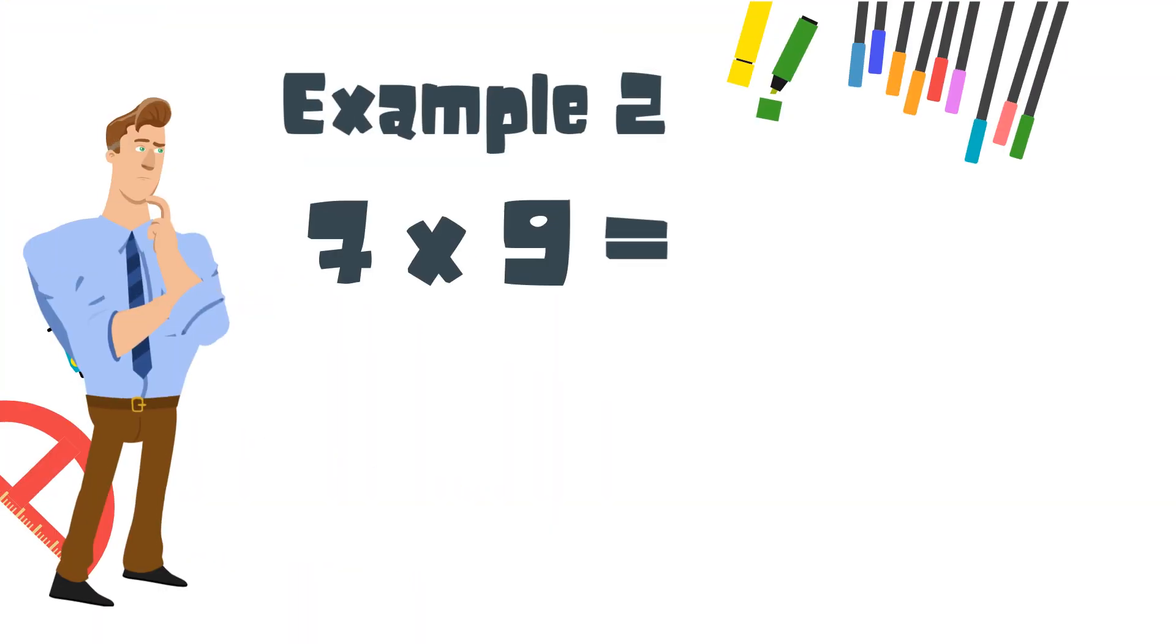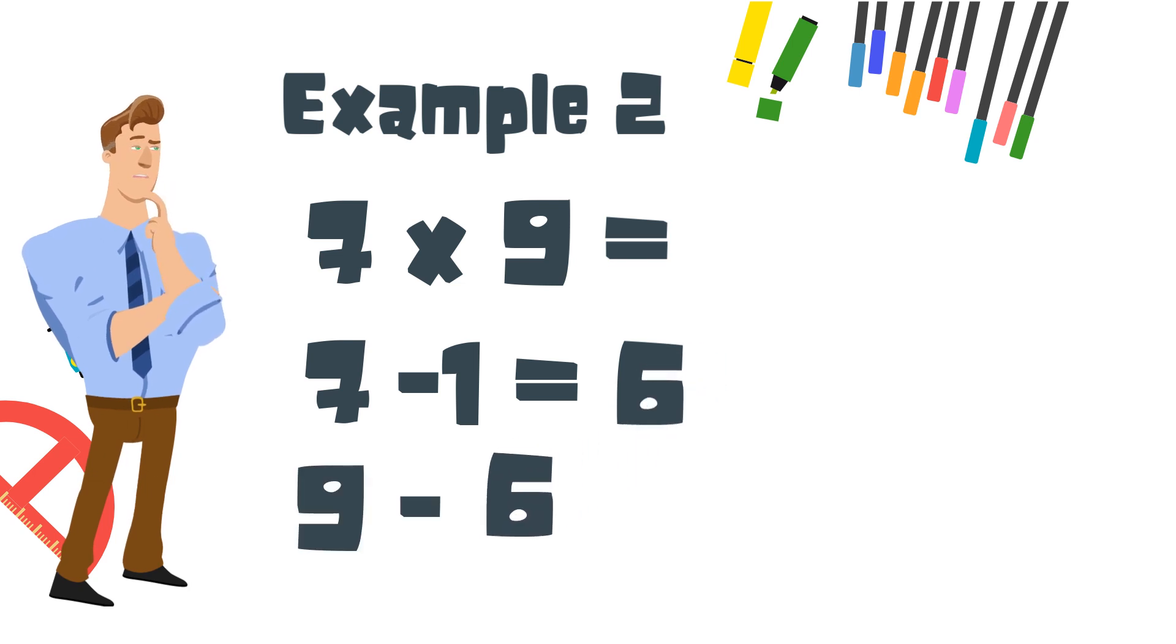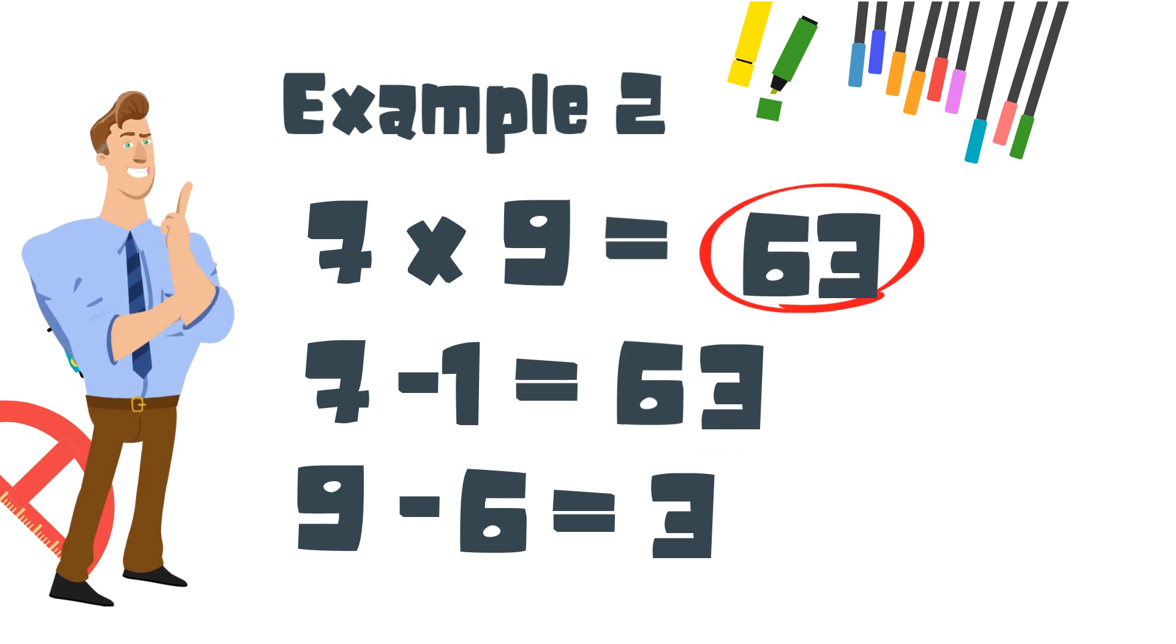Next you have 9 times 7. Step 1. 7 minus 1 equals 6. Step 2. 9 minus 6 equals 3. So 9 times 7 equals 63.